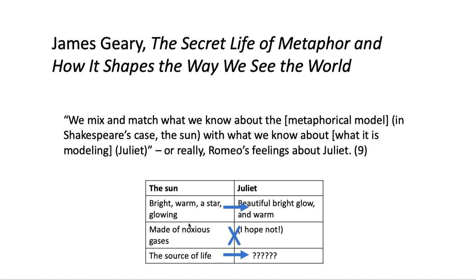But the sun is also the source of life — without it, everyone in the world would die. One would hope that in being in love with somebody, you would discard this part of the metaphor and say the person is not the source of my life. Unfortunately, Romeo did not discard that part of the metaphor, because when he thinks she's dead, he kills himself.